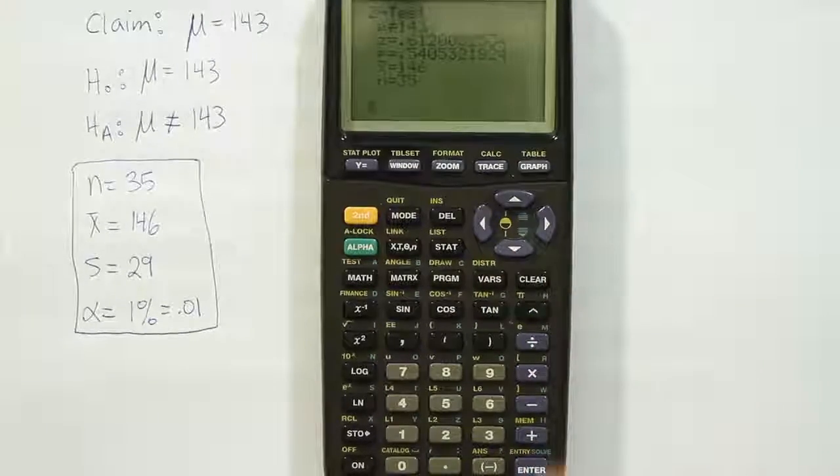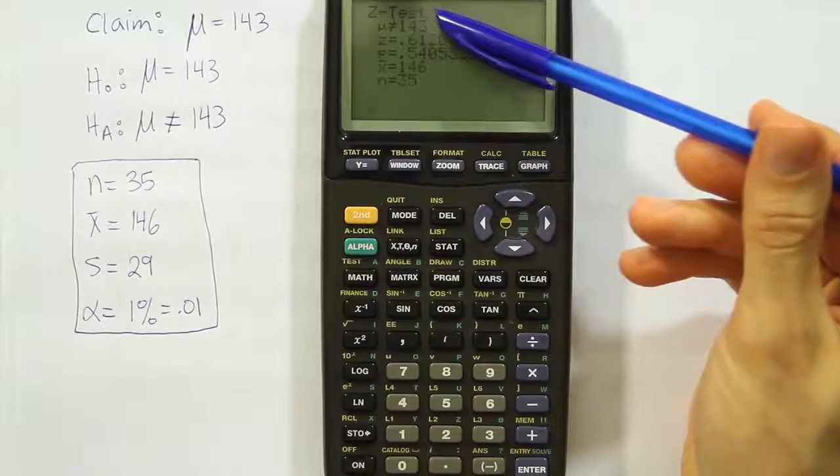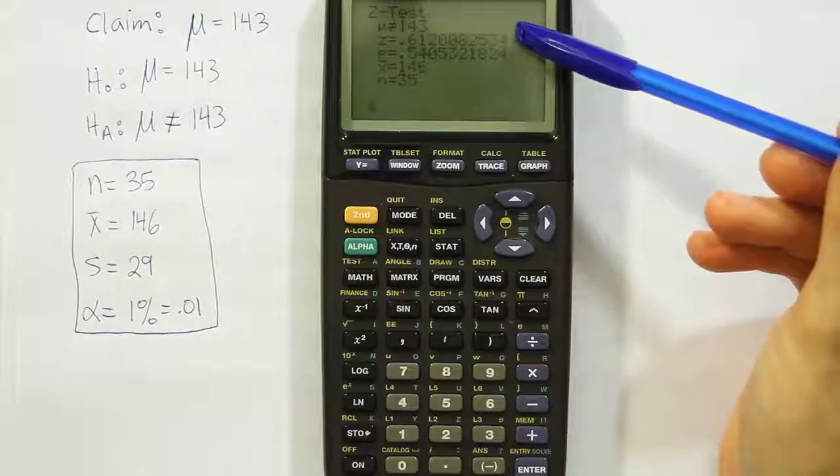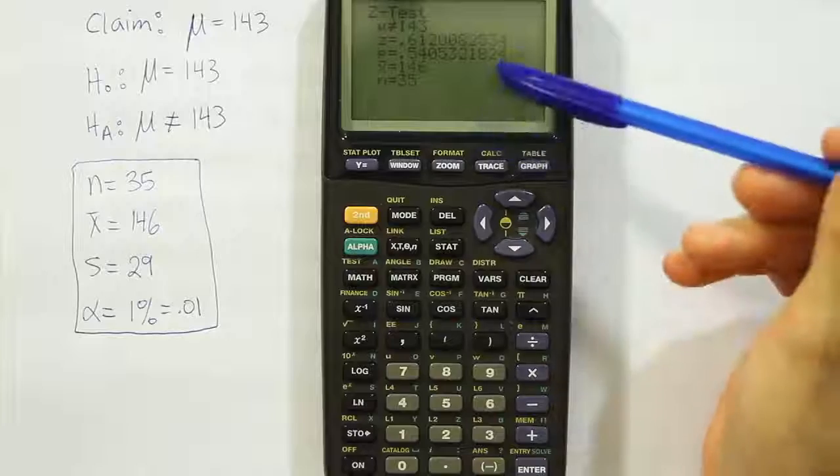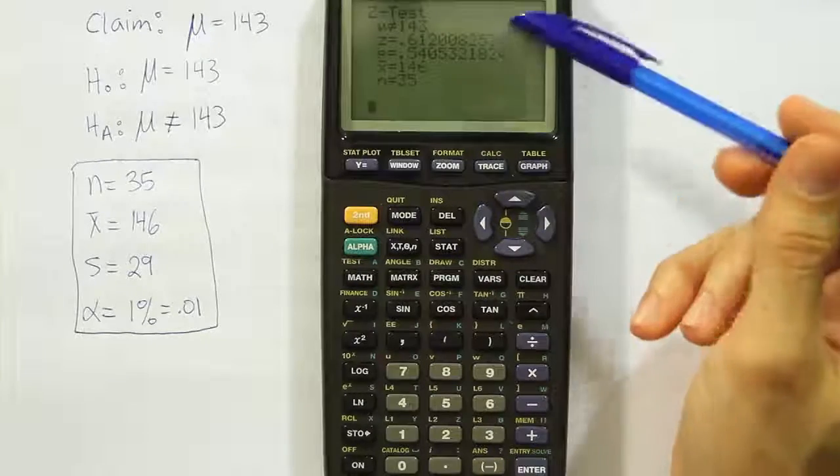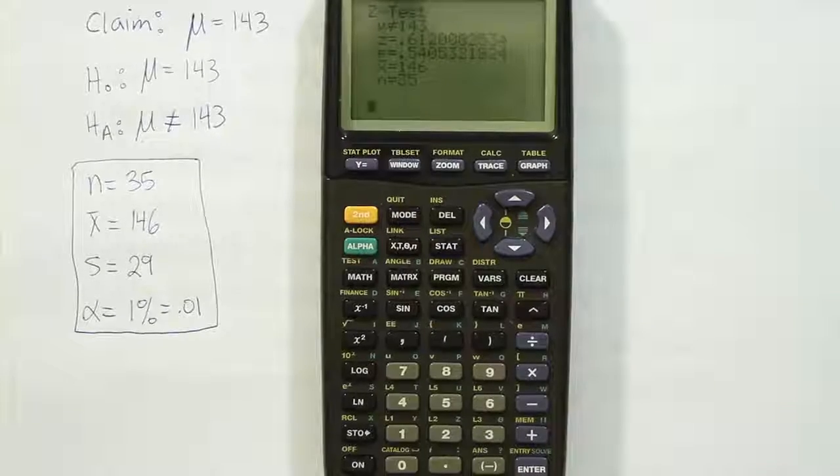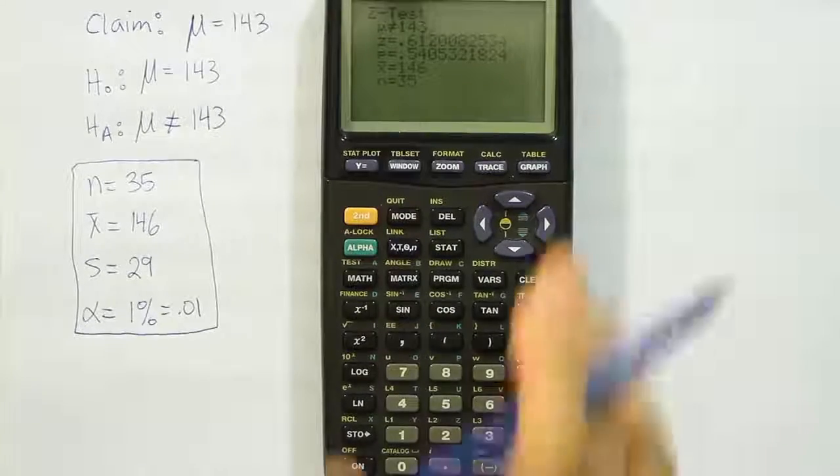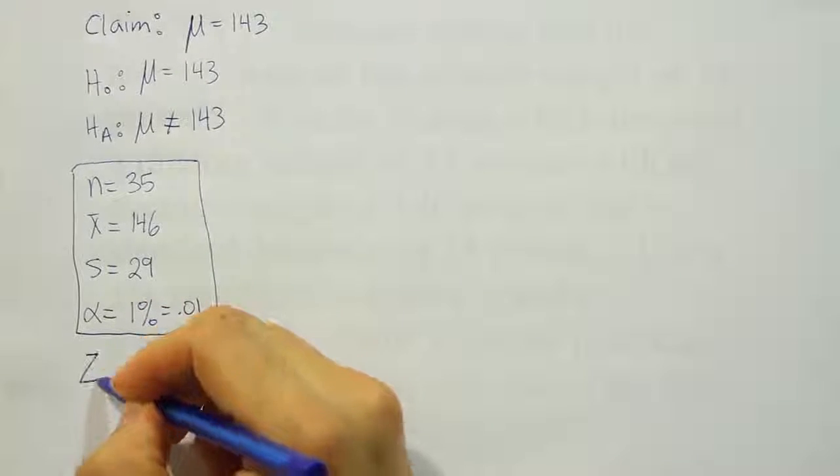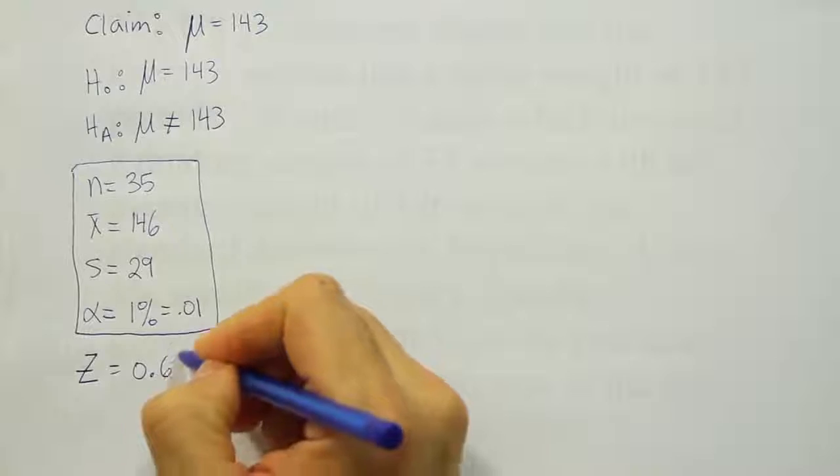And it gives us the HA at the top. And then it gives us the test stat. And then it gives us the p-value. Now the p-value we're not going to worry about here because we're going to do this problem with the traditional method. So we'll just look at the test stat. And the test stat turns out to be 0.61. So our z test stat is then 0.61.